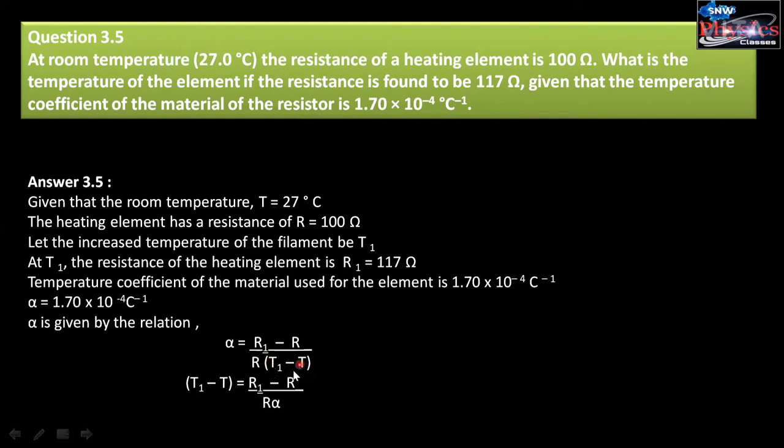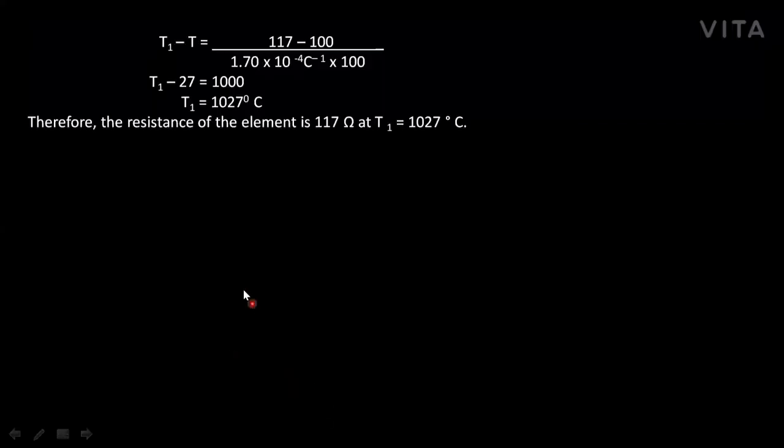So, cross multiplying, T1 minus T is equal to R1 minus R divided by R into α. Now T1 minus T is equal to 117 minus 100 divided by 100 into 1.70 into 10 to the power minus 4, which equals 1000. T1 equals 1027. Therefore, the resistance of the element is 117 Ω at T1 equals 1027 degrees Celsius.